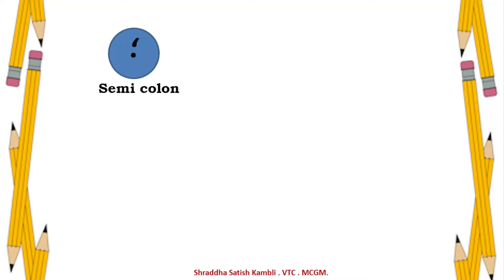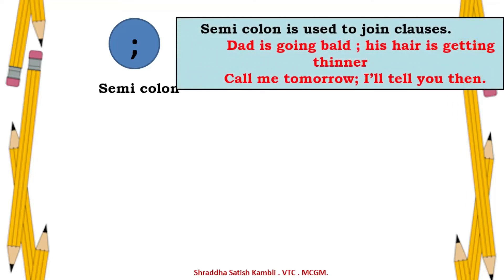A semicolon looks like a full stop and a comma together. It is used to join clauses — dependent or independent. For example: 'Dad is going bald; his hair is getting thinner.' Or: 'Call me tomorrow; I'll tell you then.' These are how semicolons are used.